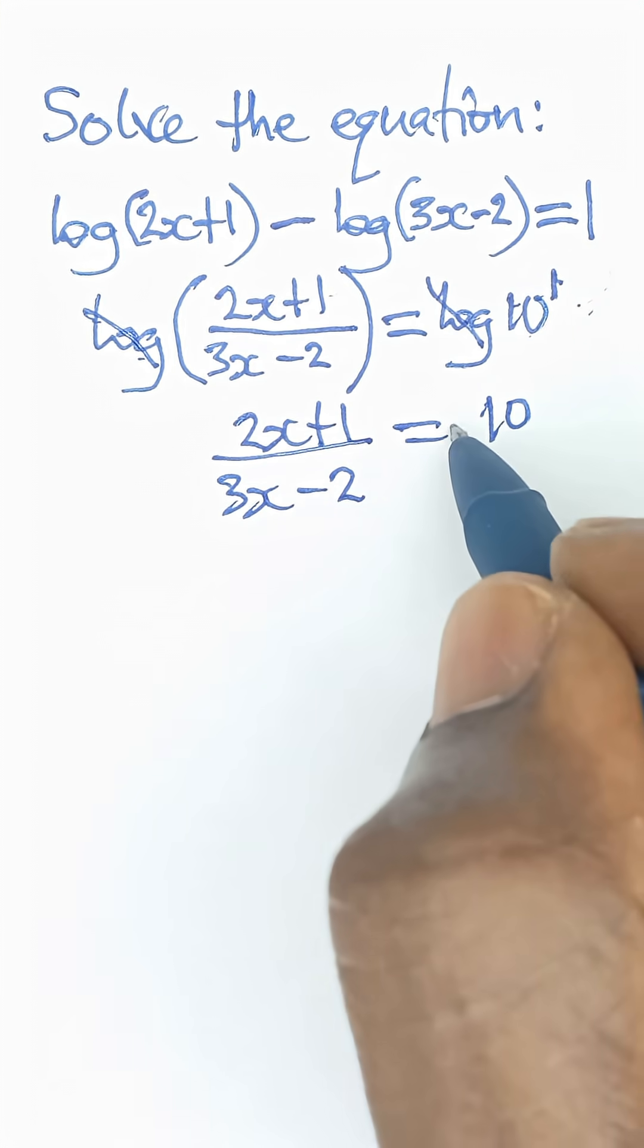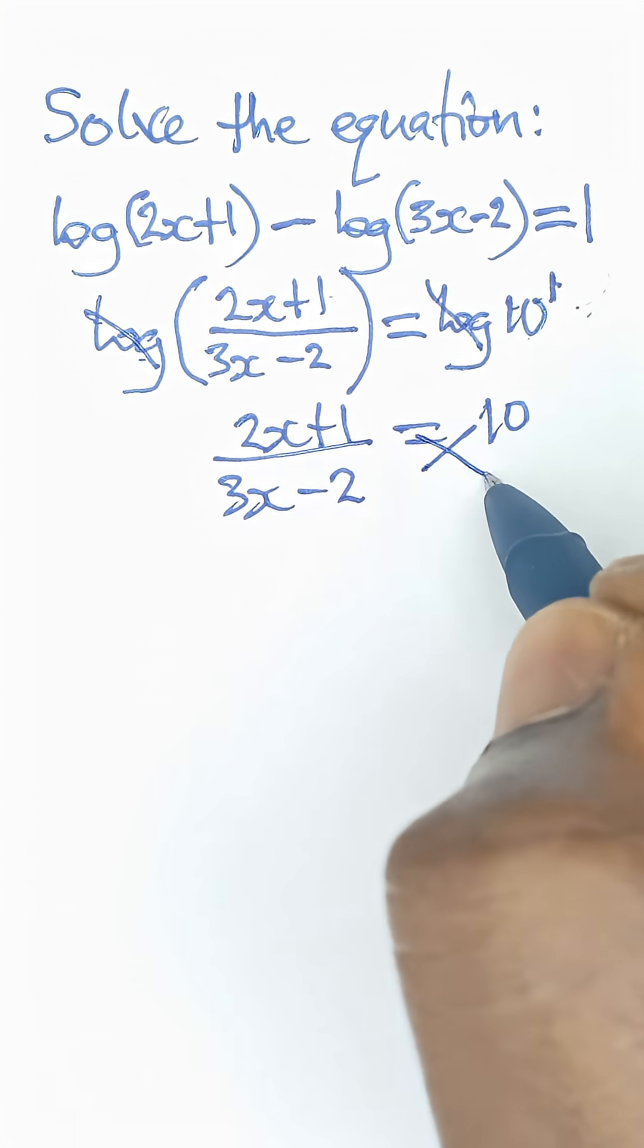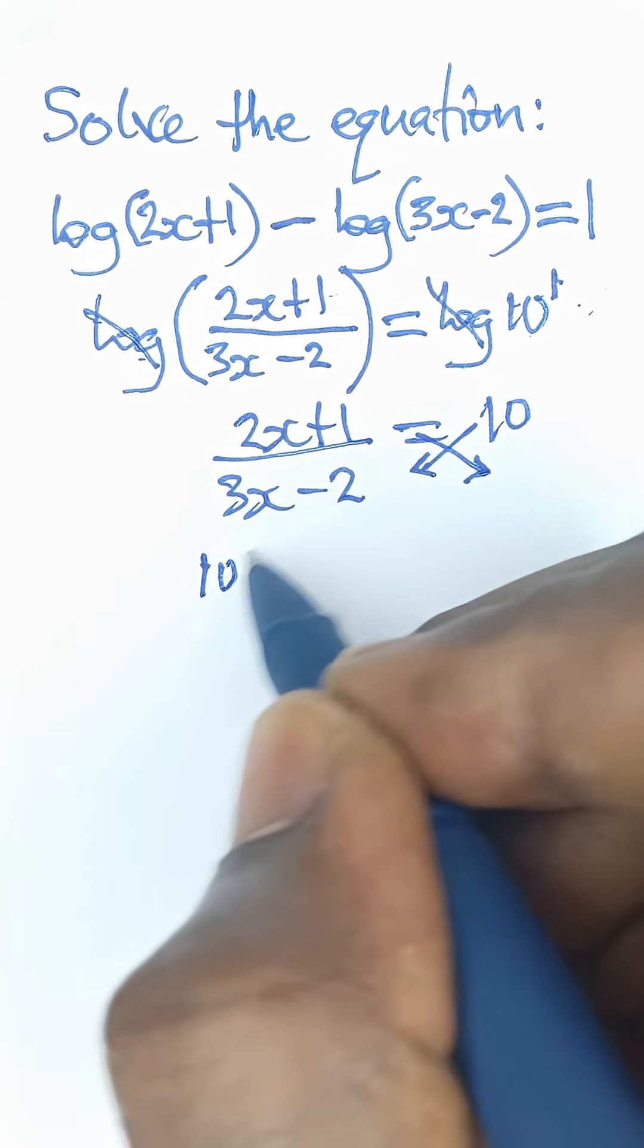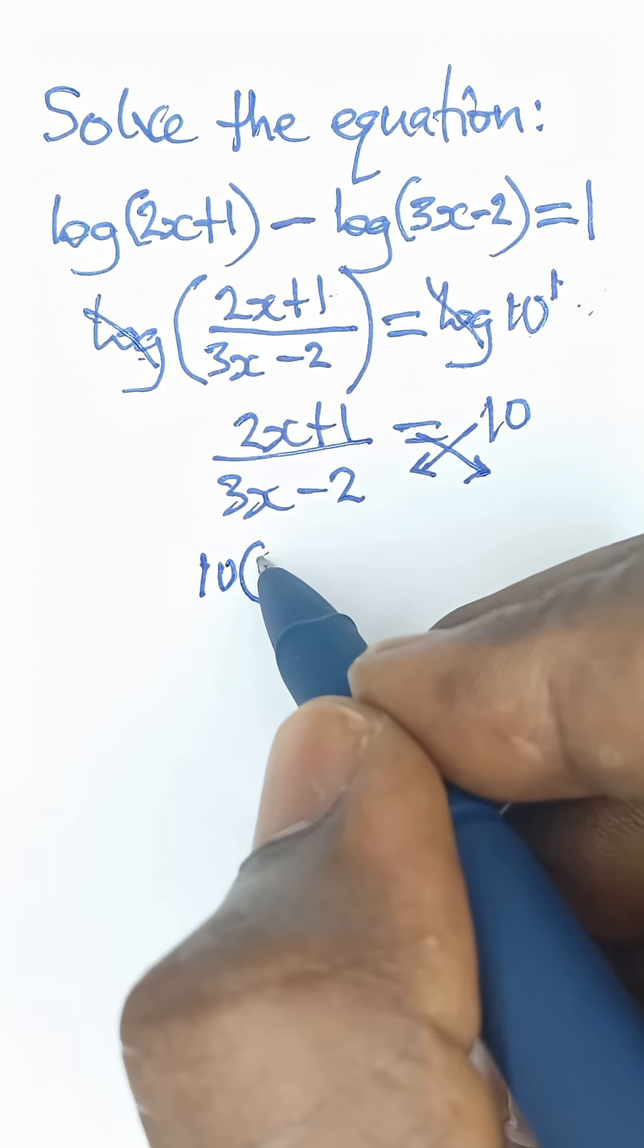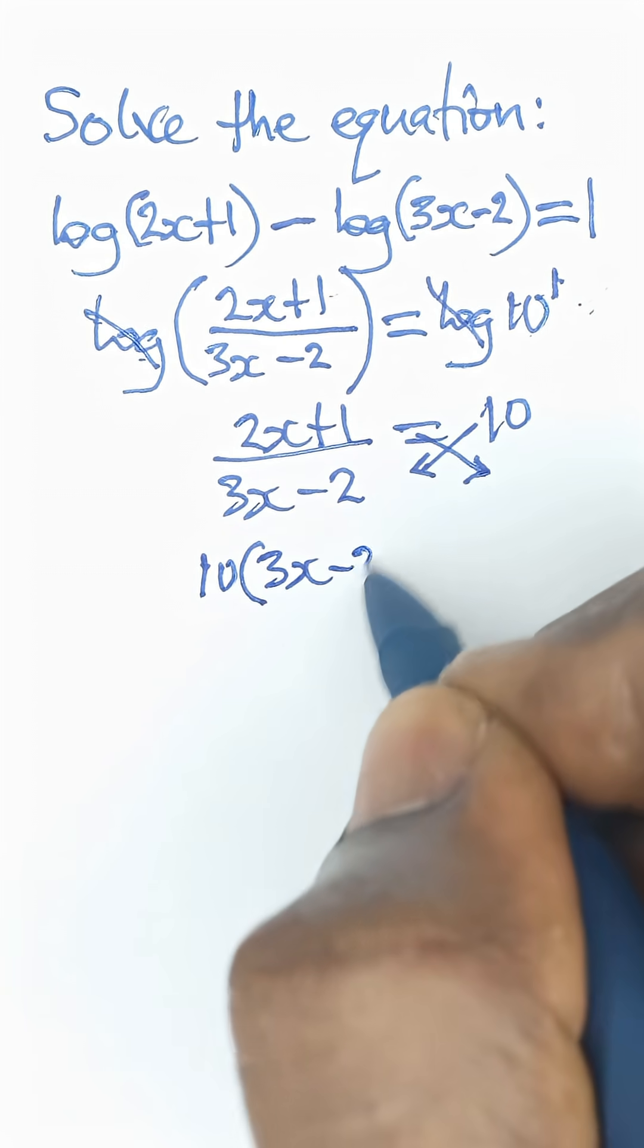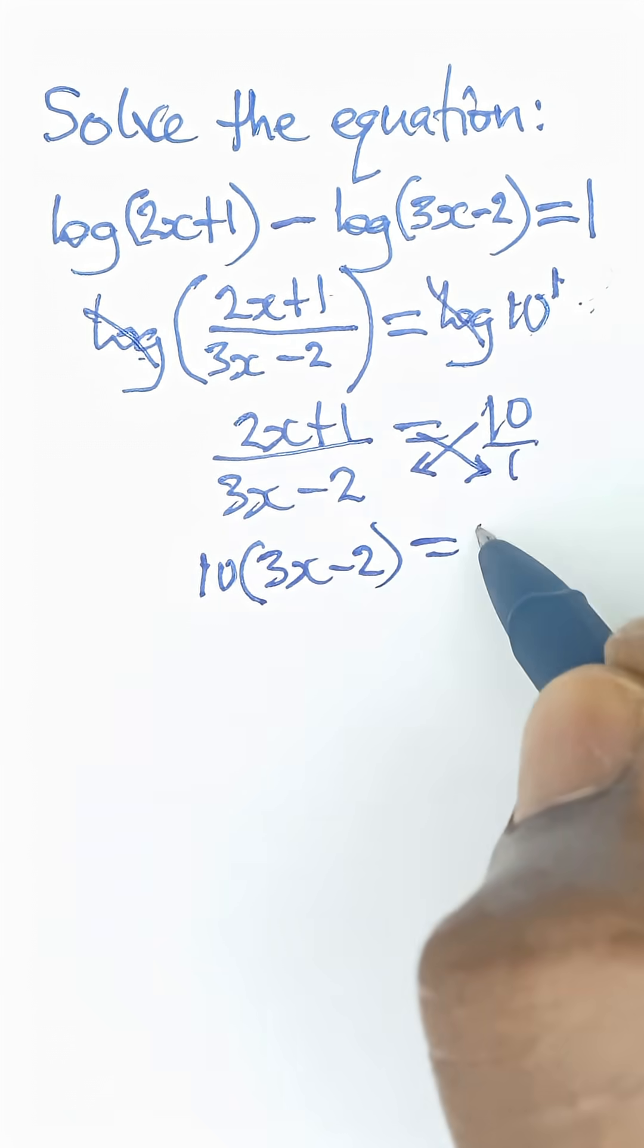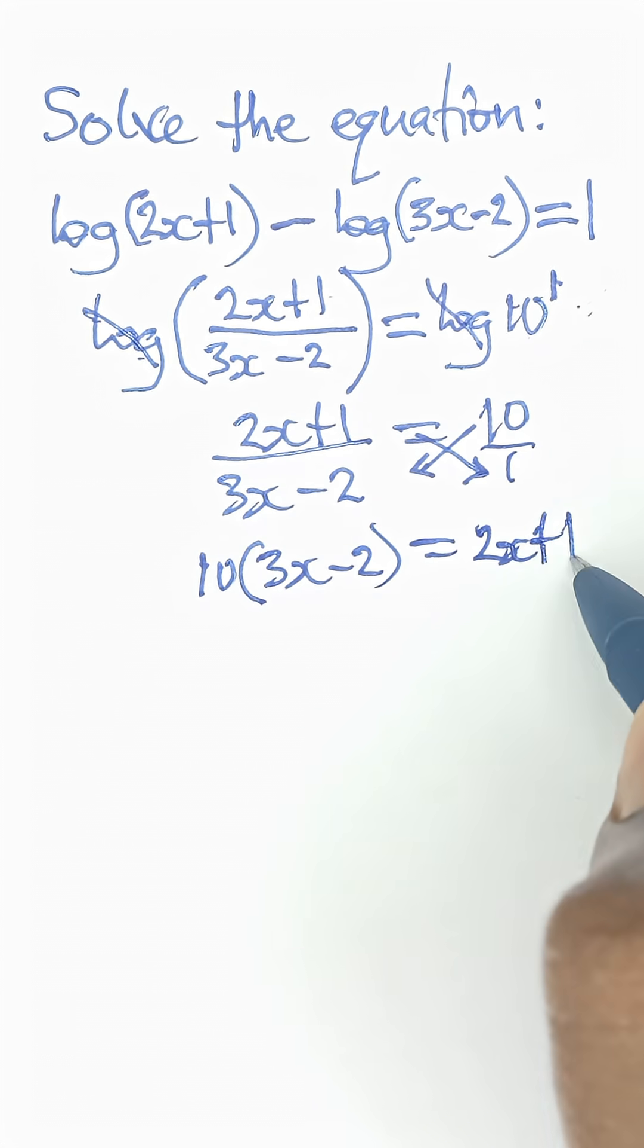So let me cross-multiply now. If I cross-multiply, what I have here is 10 will multiply this, so it gives me 10 brackets open, 3x minus 2 is equal to this multiplied by 1 here, and that becomes 2x plus 1.